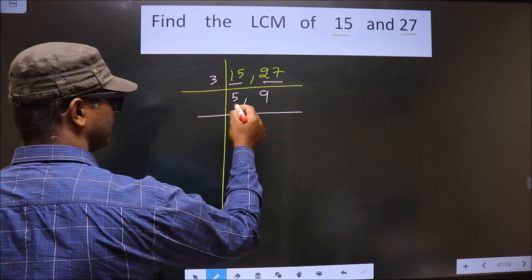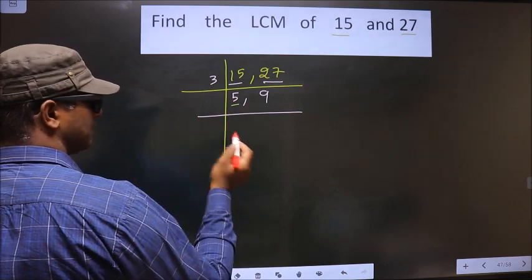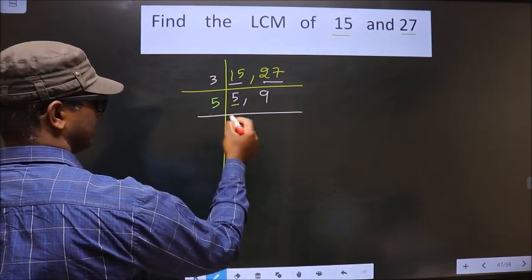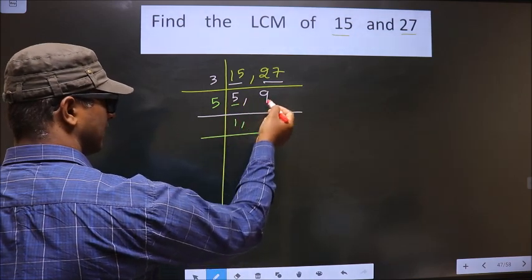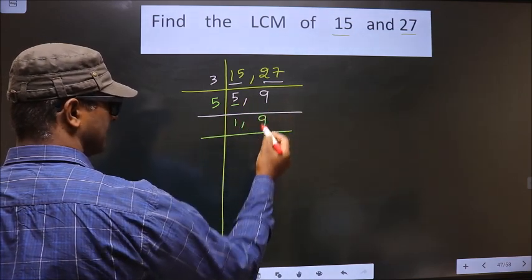Now here we have 5. 5 is a prime number, so we take 5 once, giving us 5. 9 is not divisible by 5, so you write down 9 as it is.